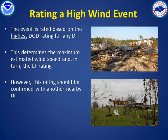If another nearby damage indicator cannot confirm the maximum estimate, then non-damage indicators such as smaller bushes, fences, and vehicles are checked for consistency with the maximum degree of damage. If no evidence is available to support the maximum DOD, then the associated damage indicator is not used.